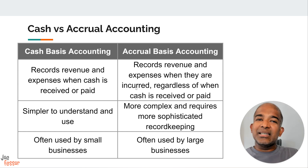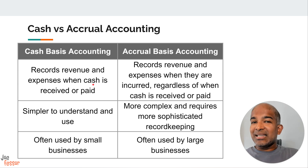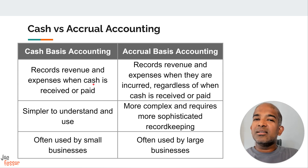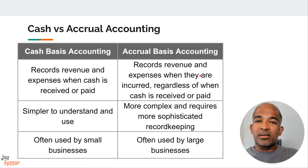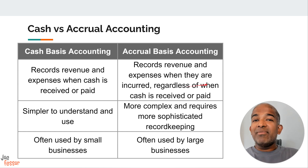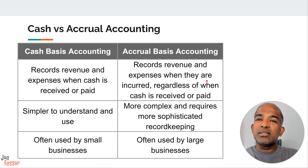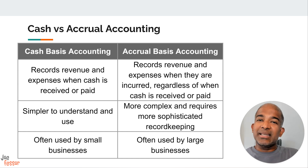Think of it like your own personal finances — you probably track your spending based on when money leaves your bank account. That's the basic idea behind cash basis accounting. It's relatively simple to understand and use, which is why it's often favored by small businesses or individuals. On the other hand, accrual basis accounting focuses on when transactions actually occur, regardless of when the cash changes hands. So revenue is recognized when it's earned — that is, when the product is delivered or the service is provided — even if the customer hasn't paid yet.